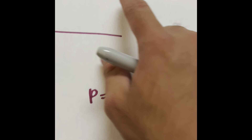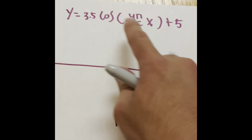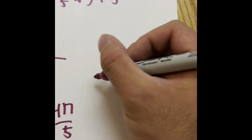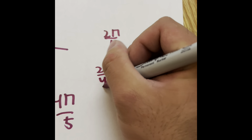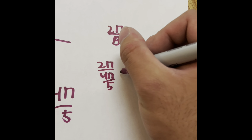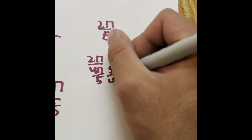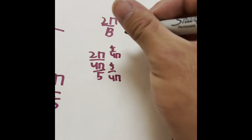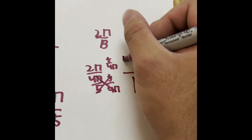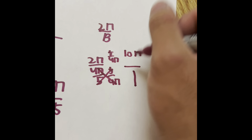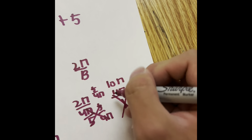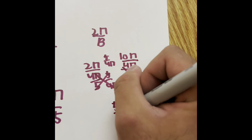If you remember from the previous video, with numbers in front of the x value, we use the formula 2π divided by b. So we compute 2π divided by (4π/5). To simplify, we multiply numerator and denominator by 5 over 4π, canceling those terms out. We get 2π times 5 on top, which is 10π, and 1 times 4π on the bottom, which is 4π. So 10π divided by 4π — the pi's cancel — giving us 5 over 2.